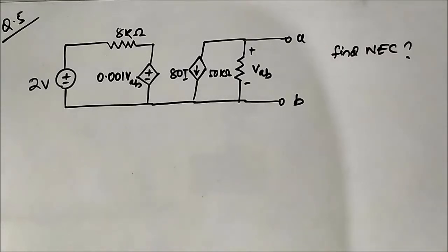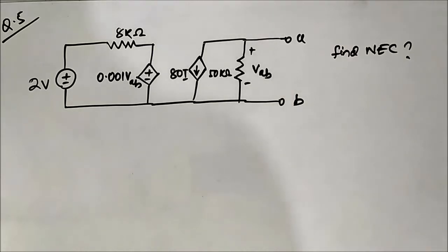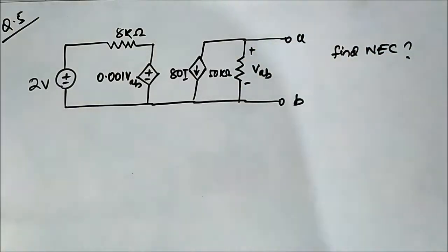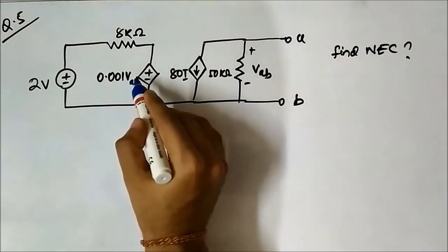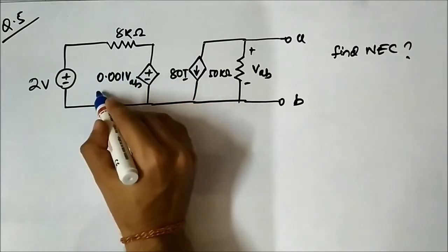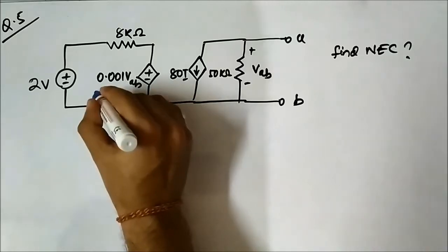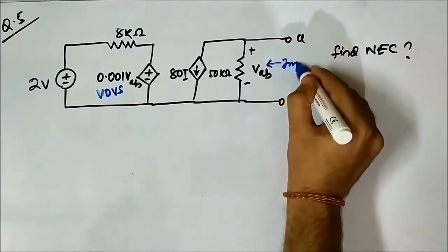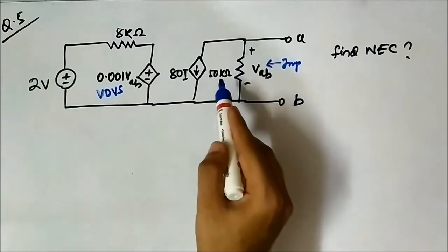Hello friends. This is the fifth question related to Norton equivalent circuit applied to circuits involving dependent sources. This is the circuit in which we have to determine the Norton equivalent across terminals A and B. There is a voltage-dependent voltage source here. The important variable is the voltage drop across the 50 kilo-ohm resistor, VAB.